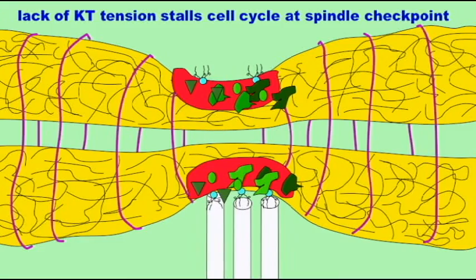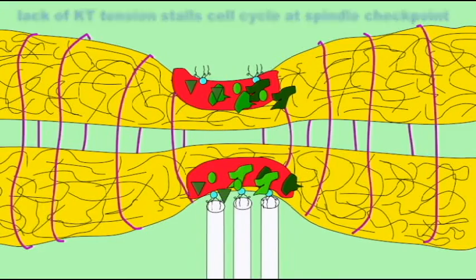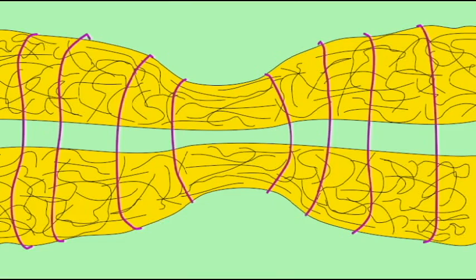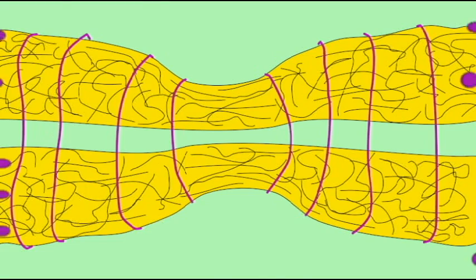And so if microtubules are not attached to one kinetochore, anaphase will be delayed, and if this situation persists, the cell may then trigger apoptosis or programmed cell death.